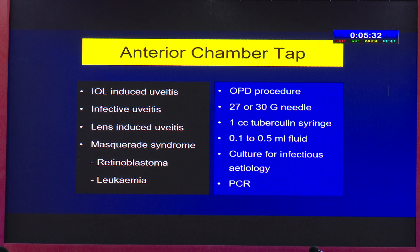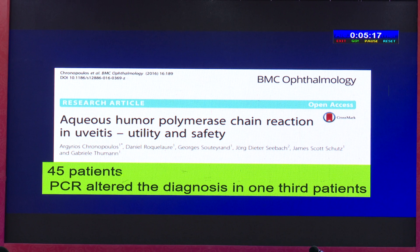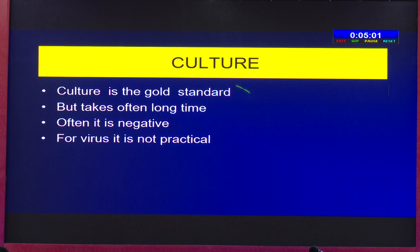The procedure is quite well established — it's an OPD procedure using a 27 or 30 gauge needle with a tuberculin syringe, taking 0.1 to 0.5 ml of fluid. Culture should be done for infectious etiology — it is the gold standard — along with polymerase chain reaction. Aqueous humor PCR has been found to be quite safe and can alter the diagnosis in a significant percentage of patients. Intraocular fluid can then be processed by direct smear or cytospin. Cytospin is better; culture and PCR or flow cytometry can also be used. Culture is the gold standard but often takes a long time and is frequently negative; for viruses it's not practical, taking about a month.